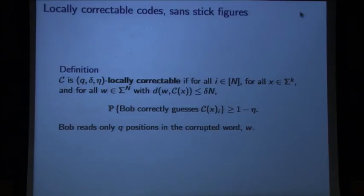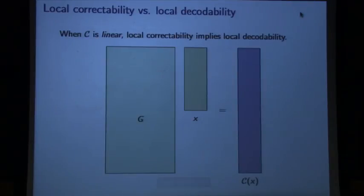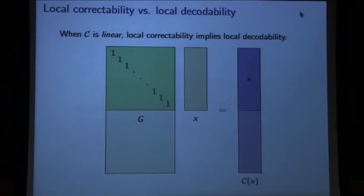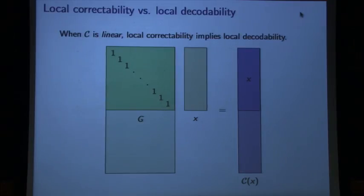This probability is taken over the randomness in the decoding algorithm, and the errors are always worst case. For linear codes, local correctability is a strictly stronger notion than local decodability. For a linear code, you can write it as a generator matrix G where the columns are the basis of the code. If you column-reduce this matrix, the message is the first set of symbols in the code word — systematic form. So if you can locally correct symbols of the code word, you can get symbols of the message, because the first symbols of the code word are the message. All the codes we discuss will be linear, so we'll talk about local correctability, which is the stronger notion.